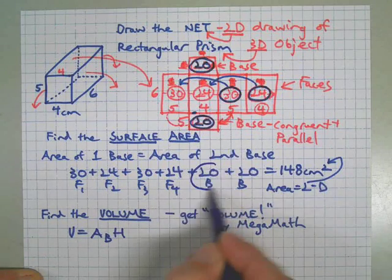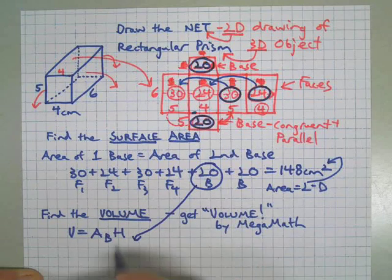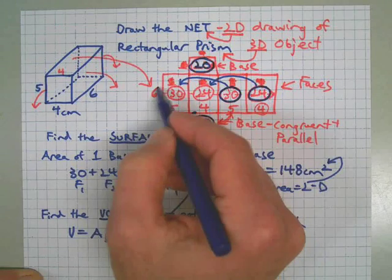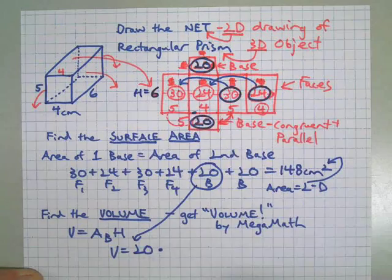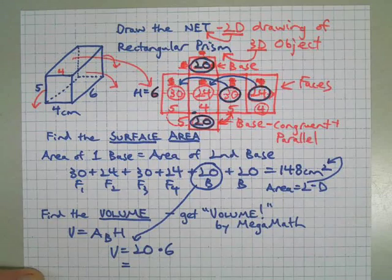Now we're going to find the volume. Volume, as you remember, is area of the base times the height. We already have the area of a base right here, don't we? So we're going to bring that down here and multiply by how tall this is. There's the height.